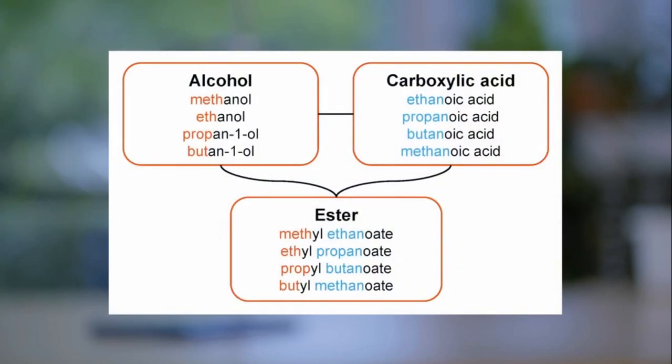Ester names have two parts: the part that comes from the acid and the part that comes from the alcohol. The reaction in test tube 1 produced the ester methyl ethanoate. Test tube 2 produced ethyl propanoate. Test tube 3 produced propyl butanoate and test tube 4 produced butyl methanoate.